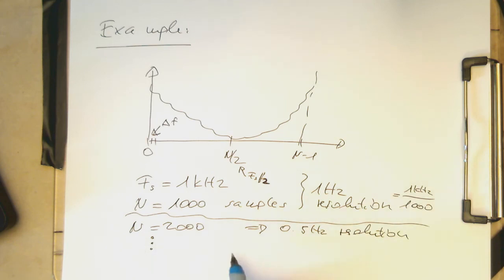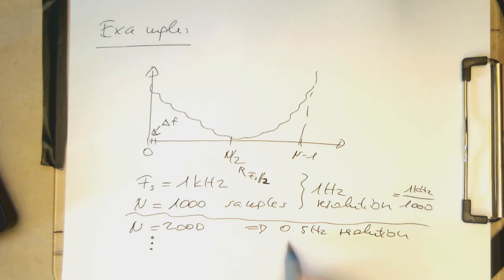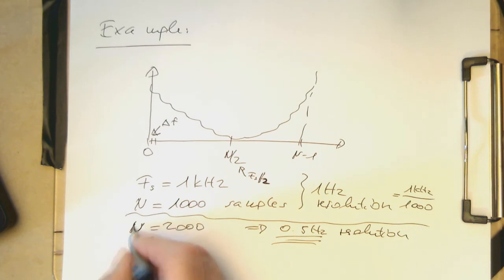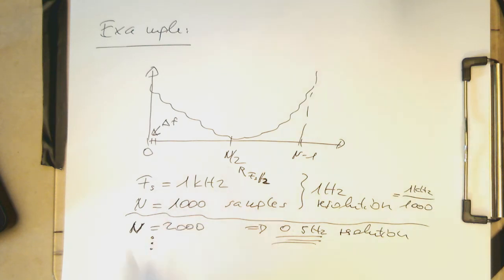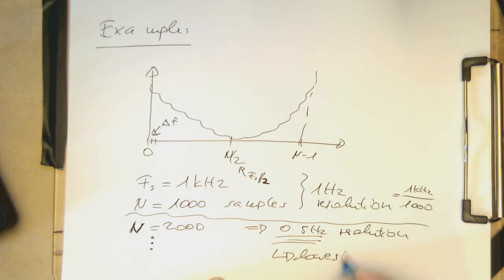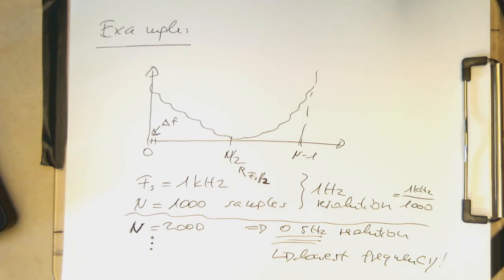That's the effect of frequency sampling. The time domain effect is that this defines the lowest frequency. The higher the N we have, the lower the minimum frequency. So with N equals 2,000, 0.5 hertz is the lowest frequency we can resolve. This defines our lowest representable frequencies. Now let's do the analytics to see how this can be derived.